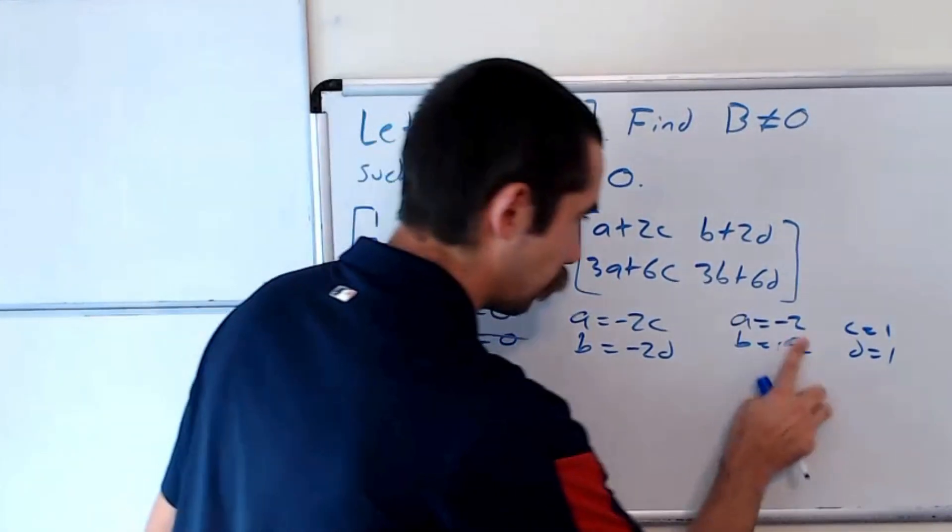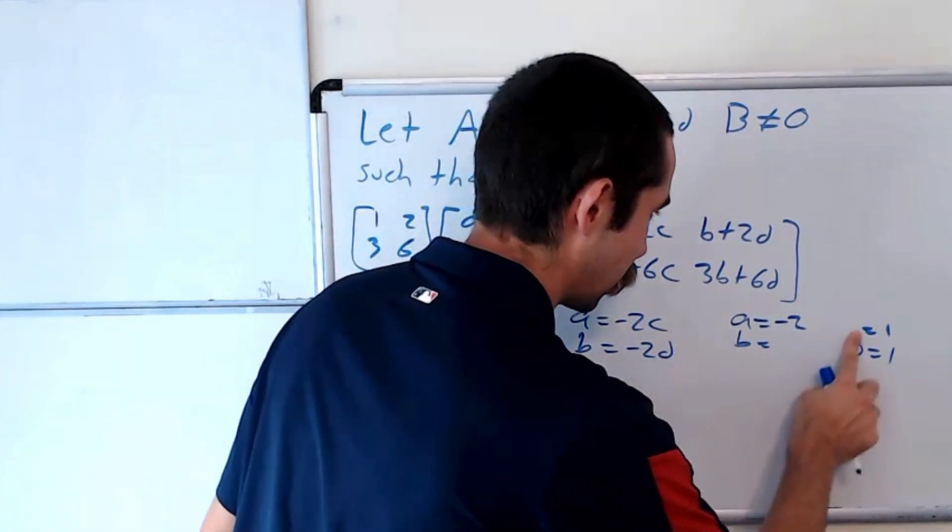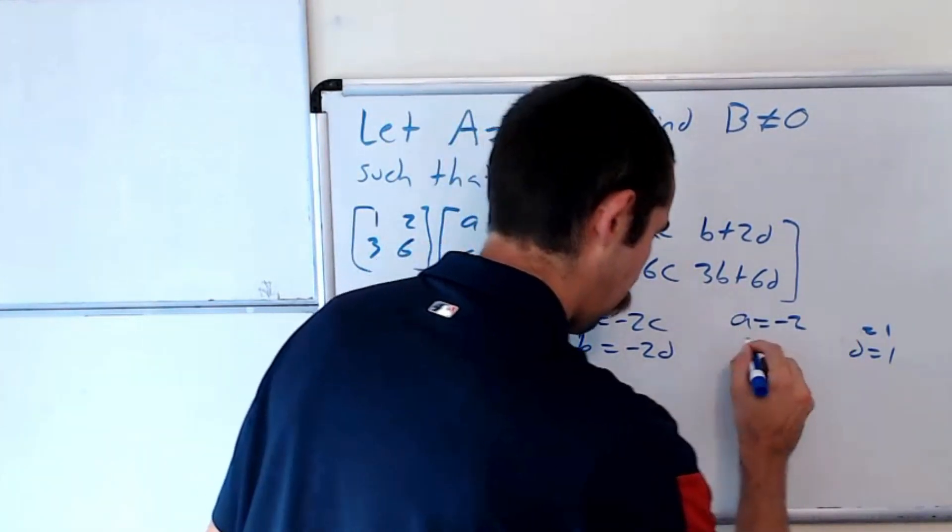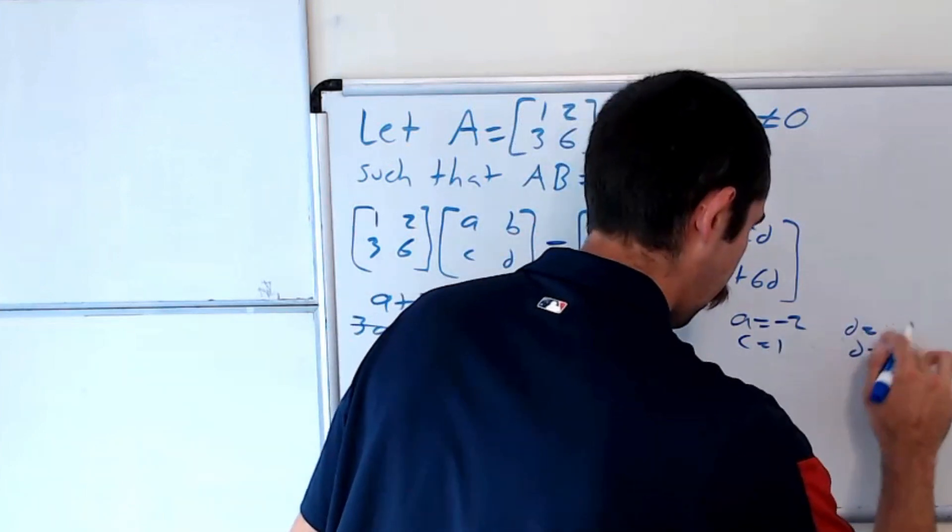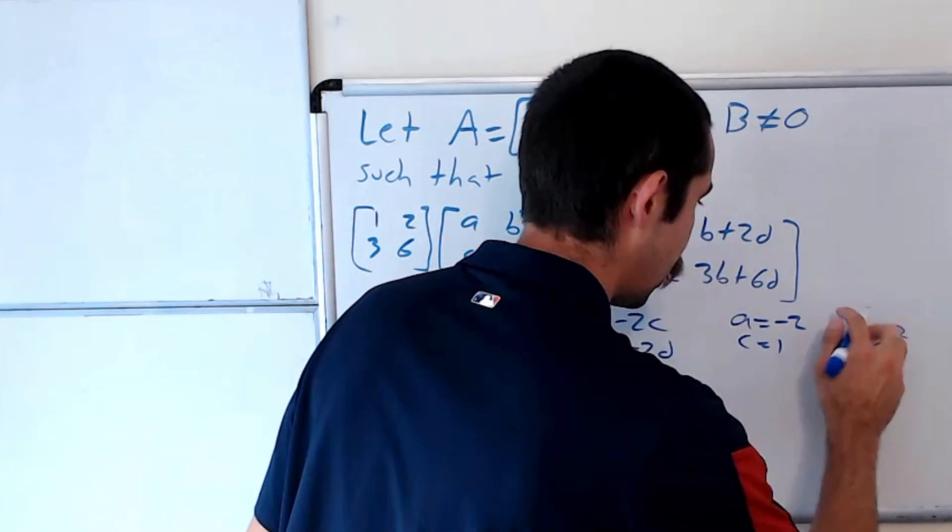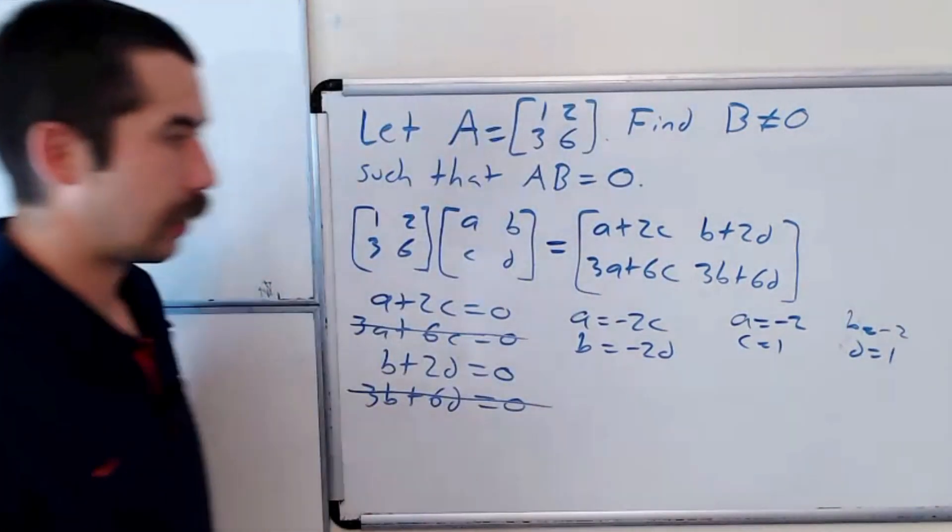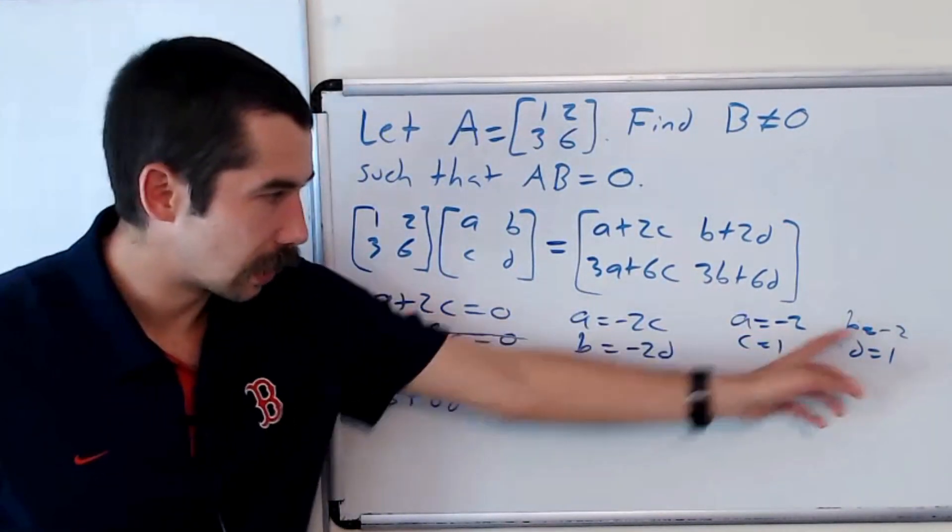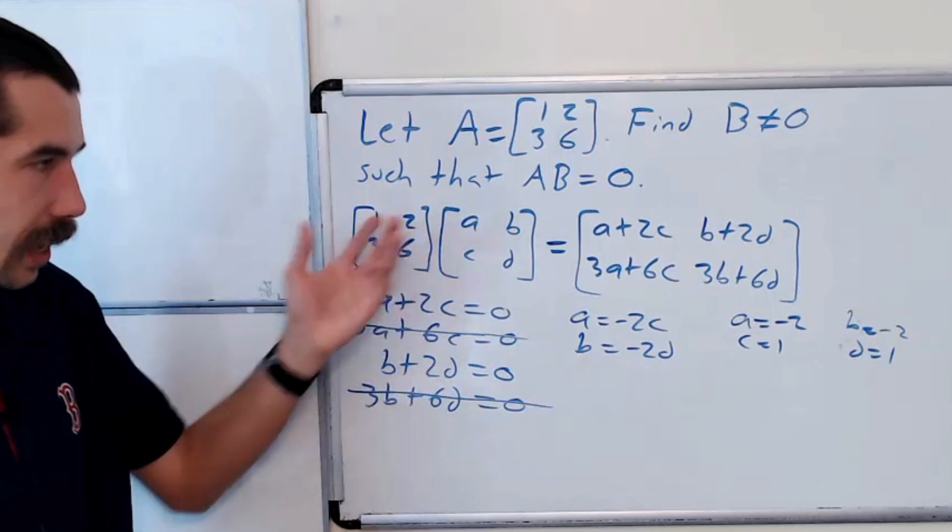Okay? And let me just rewrite how I wrote these so it matches our matrix. Okay? And so now let's just verify that our matrix, [-2, -2; 1, 1], satisfies the property.